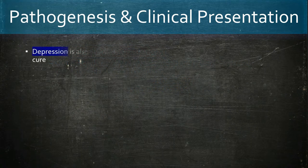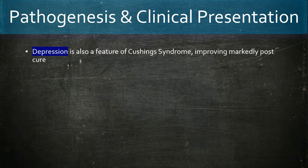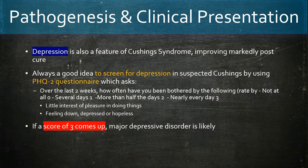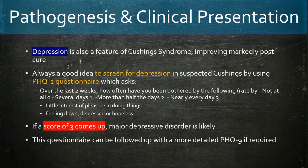Depression is also a quite common finding in Cushing syndrome. The pathophysiology is not fully known, however patients improve greatly post-cure. It is always a good idea to screen for depression using the PHQ-2 questionnaire, which asks how often patients feel little interest in doing things or feel down and hopeless. A score of three or more suggests a major depressive disorder is likely, and can be followed up with the PHQ-9.